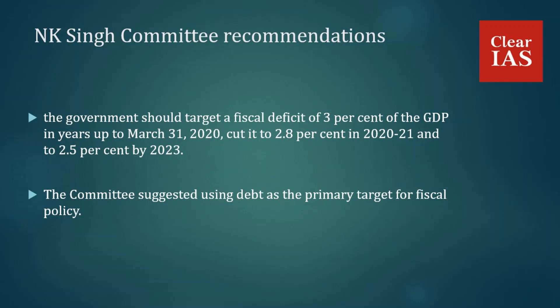The NK Singh Committee also set a revenue deficit target: revenue deficit should be reduced to 0.8% of GDP by March 31st 2023, with a minimum annual reduction of 0.5% of GDP. Regarding the fiscal deficit target, it should be reduced to 2.5% of GDP by March 31st 2023, with a minimum annual reduction target of 0.3% of GDP.